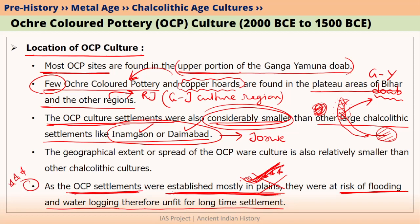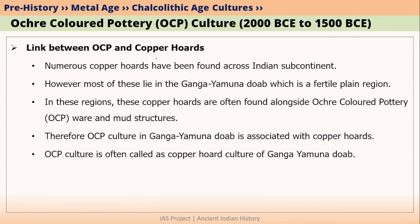OCP culture settlements were located in plains and were generally small in size compared to other Chalcolithic culture sites. In OCP culture settlements, we have also found numerous copper hoards. Let us try to link the relationship between copper hoards found in these sites and the OCP culture itself.